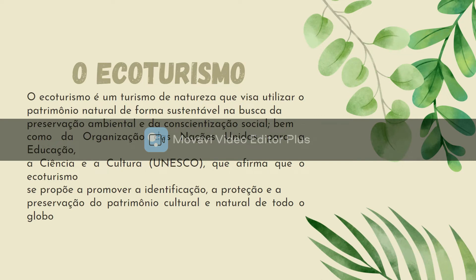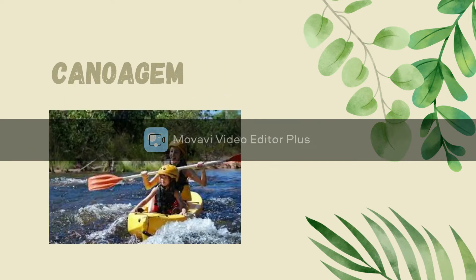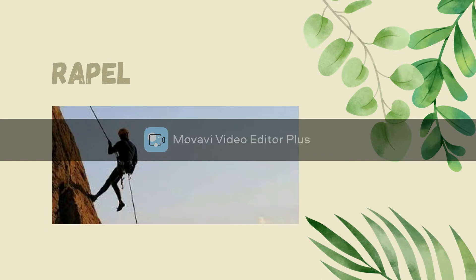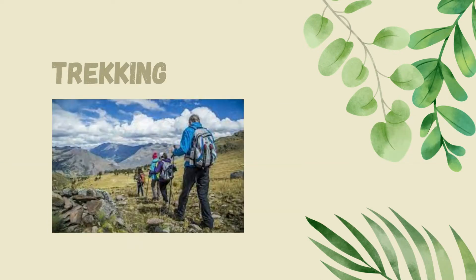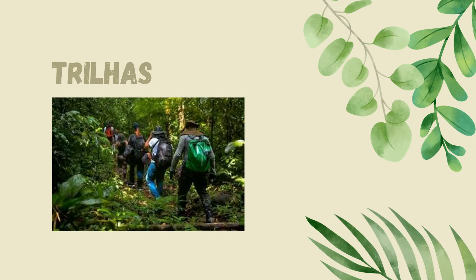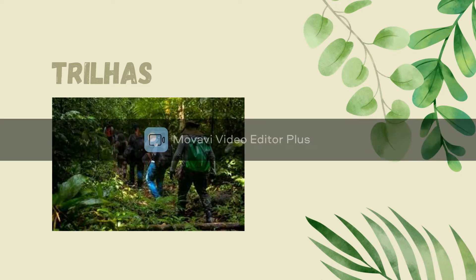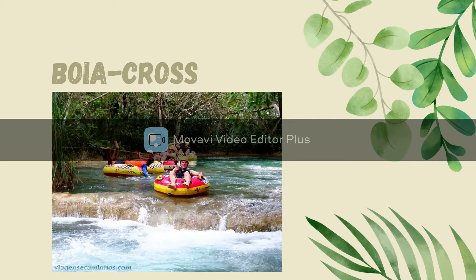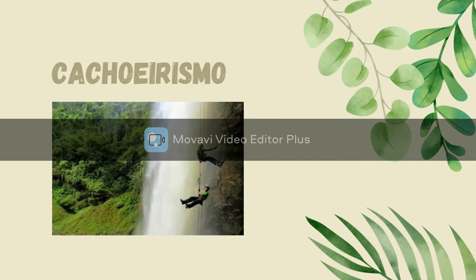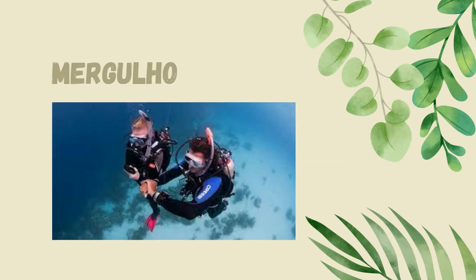Vamos trazer aqui alguns exemplos das modalidades do ecoturismo, que são a canoagem, o rapel, o trekking e as trilhas. A diferença entre o trekking e as trilhas é que o ambiente é muito diferente: o trekking é num espaço aberto, enquanto a trilha tem a identidade de ser num ambiente de mata fechada. Também temos o banho em açros, o cachoeirismo e o mergulho — essas são algumas das várias modalidades do ecoturismo.